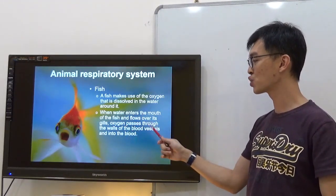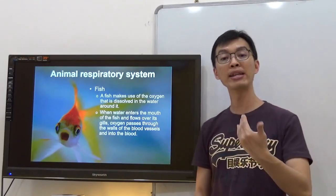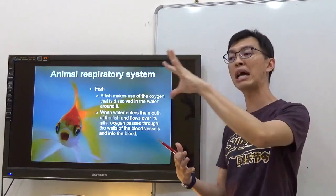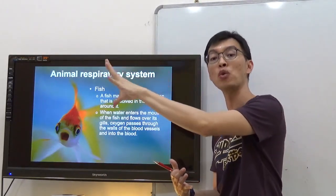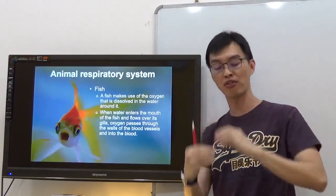When water enters the mouth of the fish and flows over its gills, oxygen passes through the walls of the blood vessels and into the blood. Continually, they are opening and closing their mouth, taking in water together with dissolved oxygen.